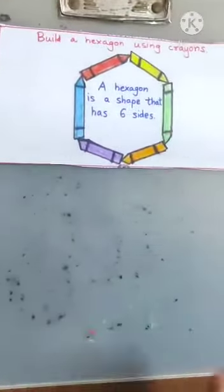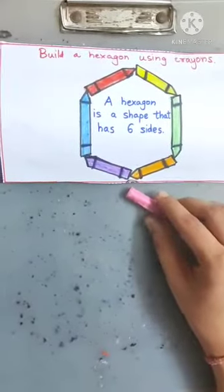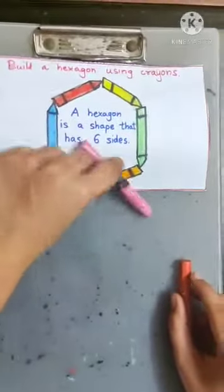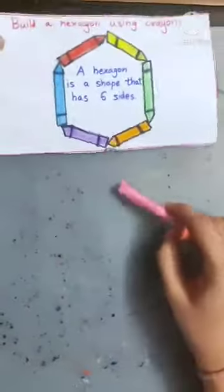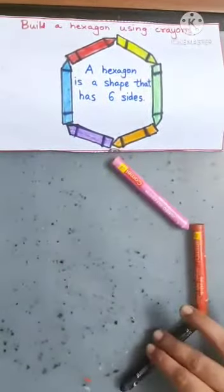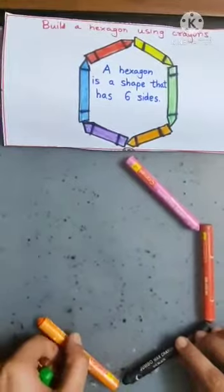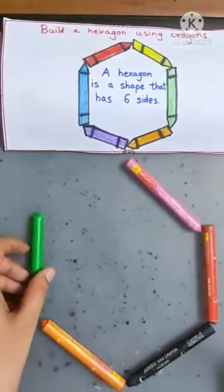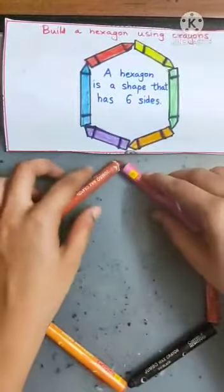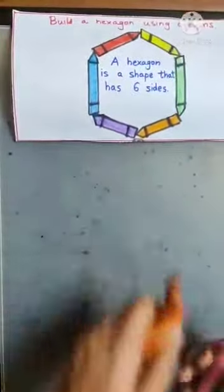We are going to make a hexagon using crayons, just how it is shown in this picture. Yes, like this, and here our hexagon is ready. Now let us play a little game with them.